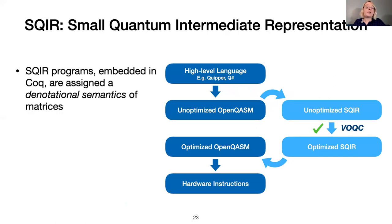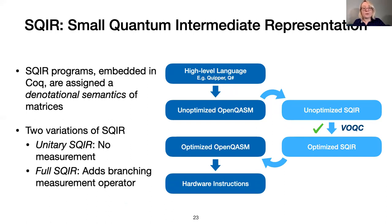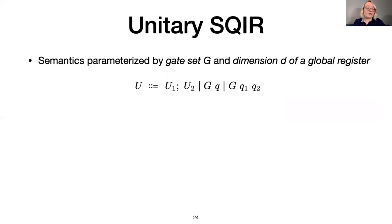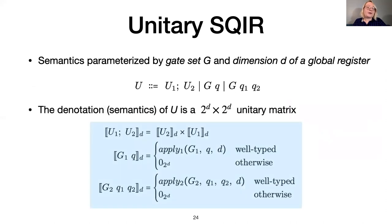This brings me to SQUIRE, our small quantum intermediate representation embedded in Coq. There are two variants of SQUIRE: unitary SQUIRE, which only allows applying unitary operations, and full SQUIRE, which includes measurement. Unitary SQUIRE is a simple language that consists of gate applications and sequencing. SQUIRE programs are parameterized by a gate set and a dimension D of the global register. The dimension of the global register is the number of qubits in the system. We need this number to determine the size of the matrix that denotes the program. The semantics of a unitary SQUIRE program is a 2 to the d by 2 to the d unitary matrix. The semantics of sequencing is matrix multiplication. Note that the product of unitary matrices is also unitary.